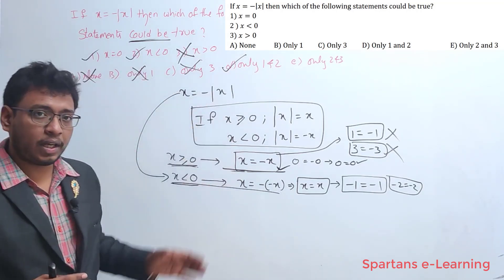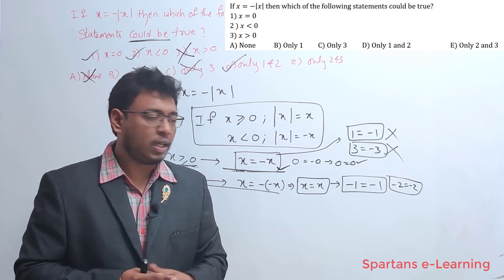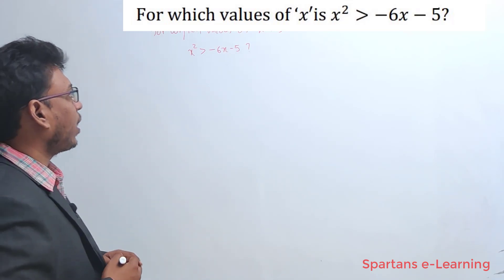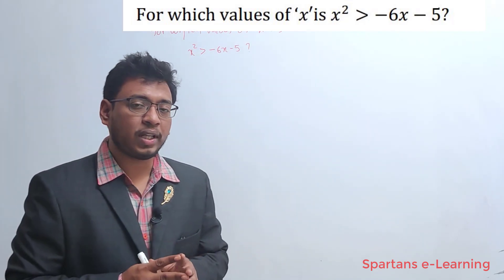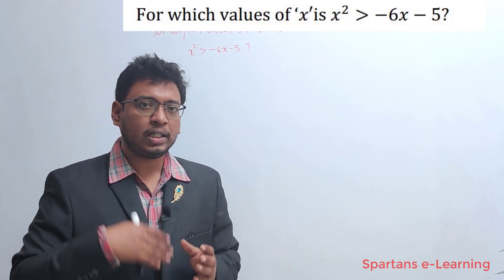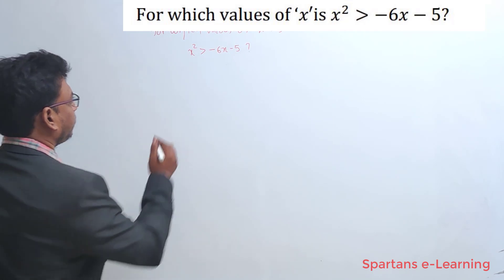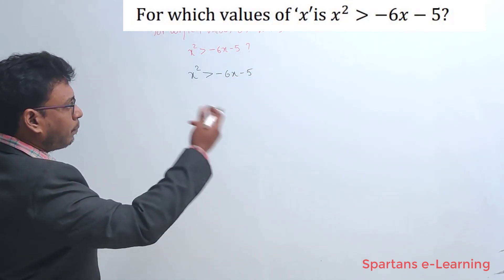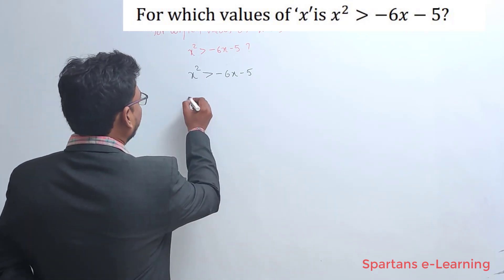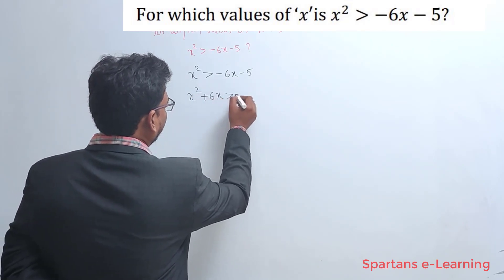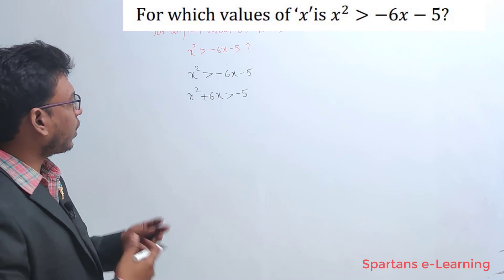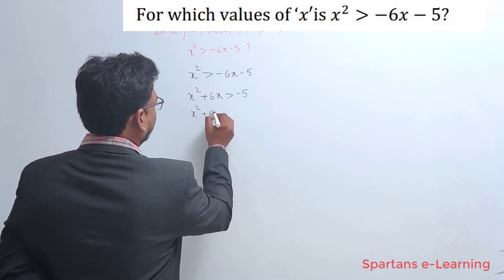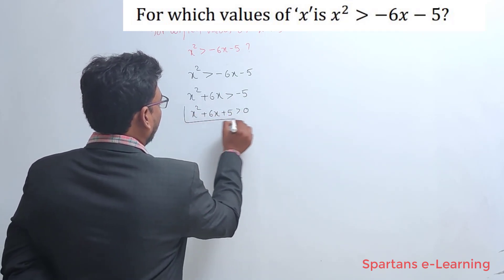Be careful while solving these inequalities — these are very tricky questions. If you are conceptually strong they won't be trickier. Let us solve our next question: for which values of x is x² > -6x - 5? You are asked to find the range of x. No options are given — try to find the range of x.